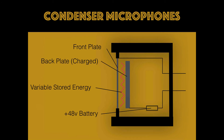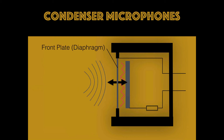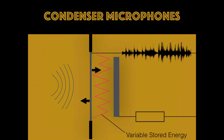Looking at the anatomy of a condenser microphone, you will see that there are two thin plates. The voltage provided by the phantom power creates a charge between these two plates. When a sound wave hits the front plate, it acts as a diaphragm and changes the capacitance of the charge depending on how the diaphragm moves. Capacitance means how much of an electrical charge is being stored, and the change in energy is what translates the acoustic sound pressure into an electrical signal.